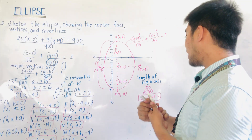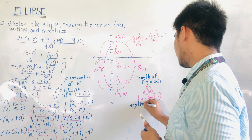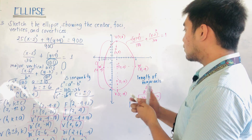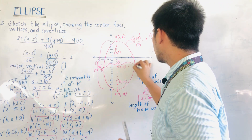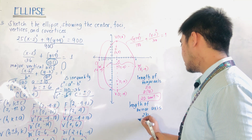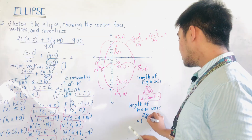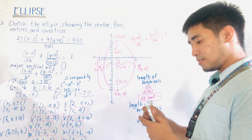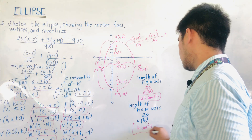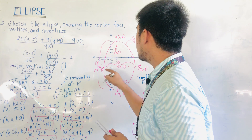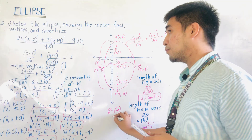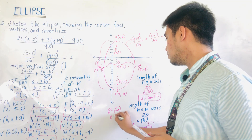What is the length of the minor axis? The length of the minor axis is always 2b, which is 2 times 6, equaling 12 units. This spans from W prime at x = −4 to W at x = 8. That is 8 minus (−4), which equals 12 units.